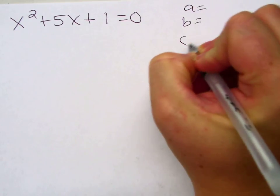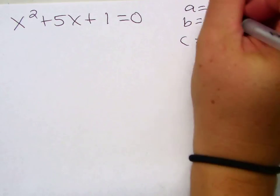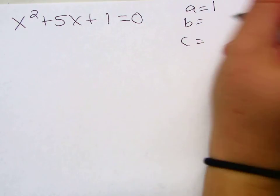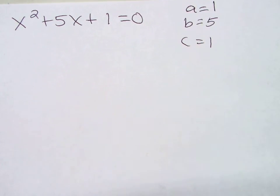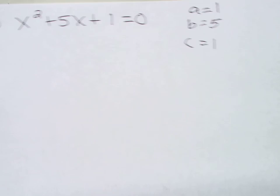A, B, and C. What's A? There's nothing in front, so it's 1. B is 5. C is 1. Okay? Again, plug in. Write it out.